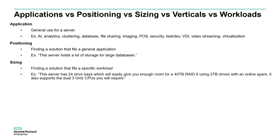Sizing is finding a solution that fits a specific workload. Where positioning says 'this server holds a lot of data for large databases,' sizing says 'this server has 24 drive bays, which will give you room for that 40 TB RAID 6 using 2 TB drives plus an online spare, and it supports dual 3 GHz CPUs.' Sizing is done for a specific workload; positioning is for a general application.